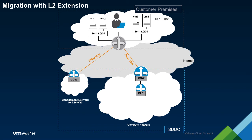In this example, we will explore the notion of migration using L2 network extension. The idea is to extend one or more networks from the on-prem environment into the SDDC and then migrate groups of workloads over the course of multiple maintenance windows.